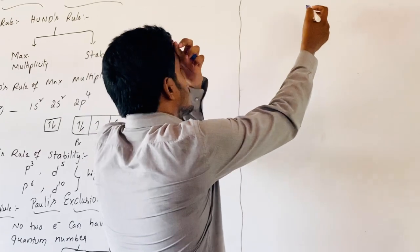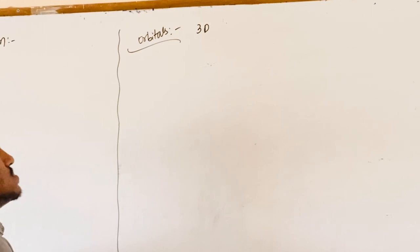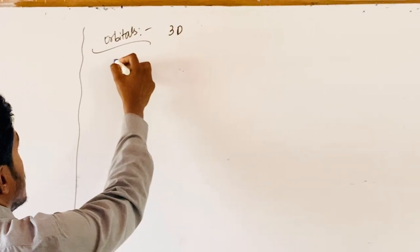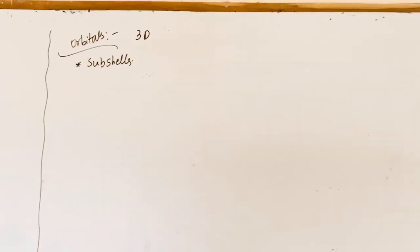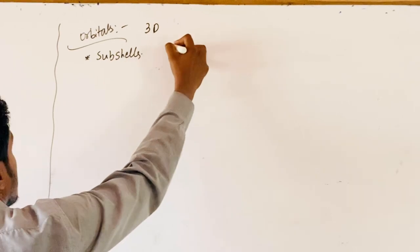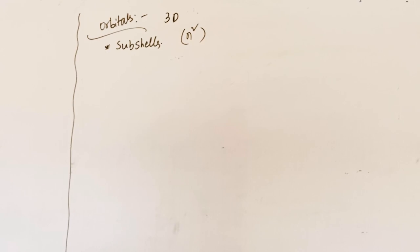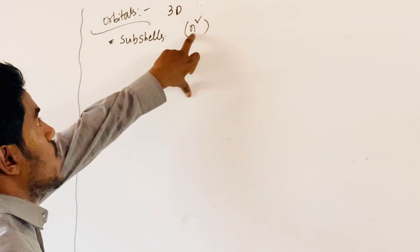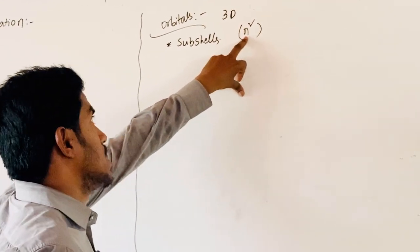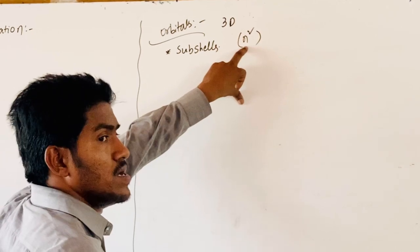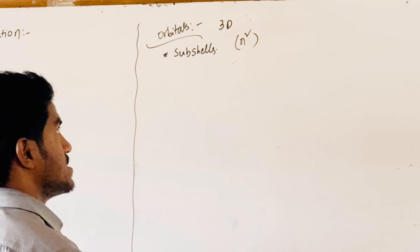Coming to the types of orbitals. Each orbital is in 3D view. The orbitals can also be called as subshells. The number of orbitals given by the expression n-square. N represents orbit number. For example, if n is 1, 1-square equals 1. Therefore, first shell can have only S-orbital. If n equals 2, 2-square equals 4. 2S, 2Px, 2Py, 2Pz.